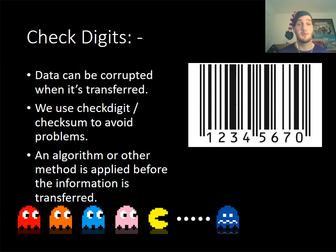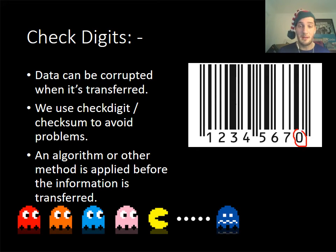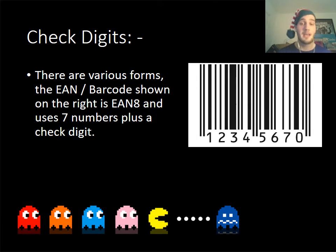Check digits are used to check our data. Imagine you received a jumbled letter — you'd know something wasn't right. We can use a check digit to make sure information has come through accurately, and it's generally used in things like barcodes. The check digit is an algorithm used to verify that information has been transferred correctly. EAN8, for example, uses seven digits plus a check digit on the end to verify the algorithm is correct.